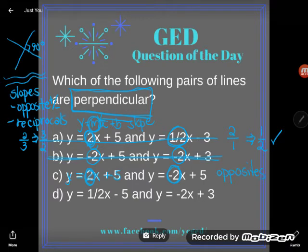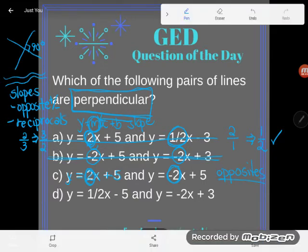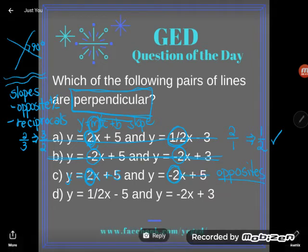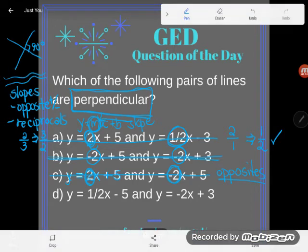But careful, like we said, perpendicular lines have to be opposites in two ways. Opposite signs, but also reciprocals. Those are not flips or reciprocals of each other. So, dear goodness, it better be d.